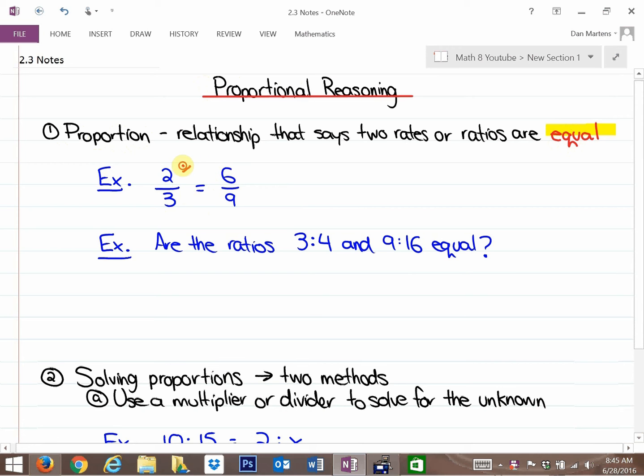And the reason here is because the multiplier for the numerator and the denominator are equivalent to each other. So two times three is six, and three times three is nine, so proportionally, the second ratio or fraction is three times larger than the first one, but they are equivalent.